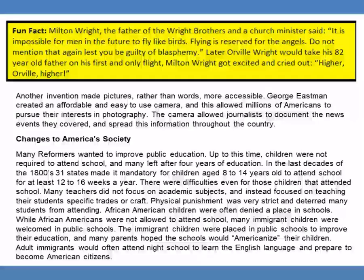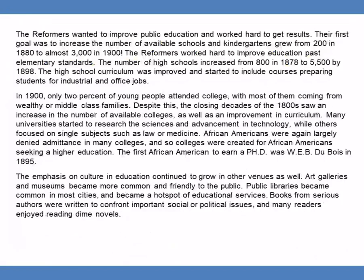Adult immigrants would often attend night school to learn the English language and prepare to become American citizens. The reformers worked hard to increase the number of available schools, and kindergartens grew from 200 in 1880 to almost 3,000 in 1900. The number of high schools increased from 800 in 1878 to 5,500 by 1898, and the curriculum improved to include courses preparing students for industrial and office jobs. In 1900, only 2% of young people attended college, with most coming from wealthy or middle-class families. Despite this, the closing decades of the 1800s saw an increase in the number of available colleges as well as an improvement in curriculum.